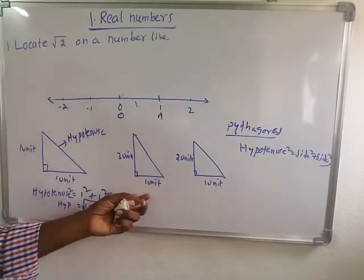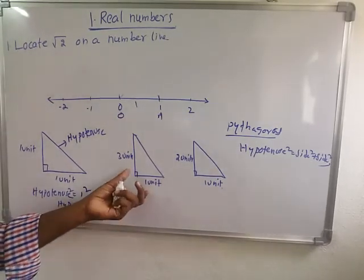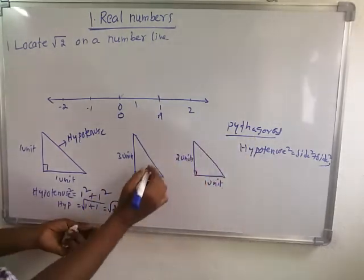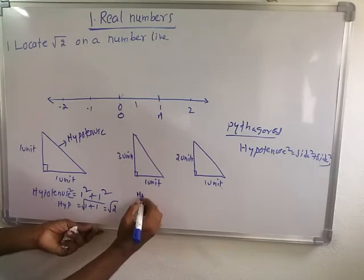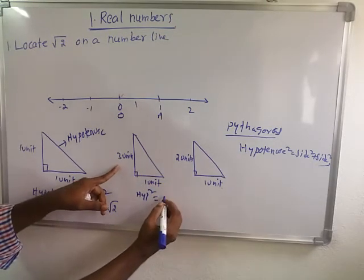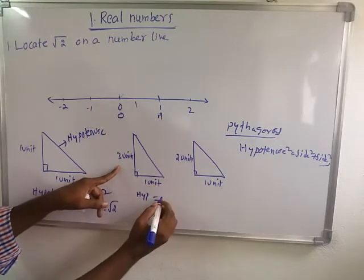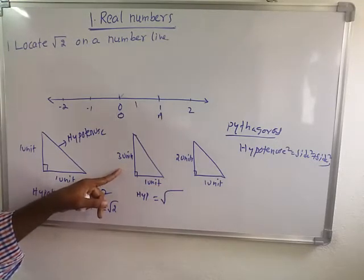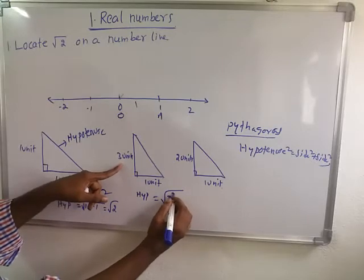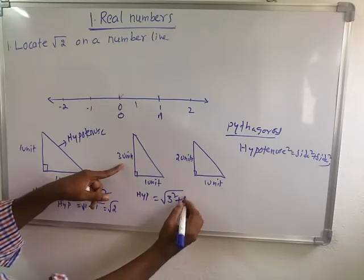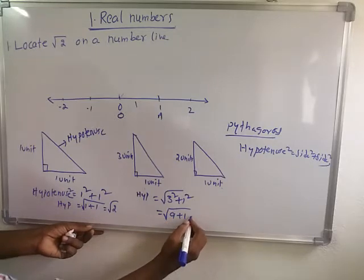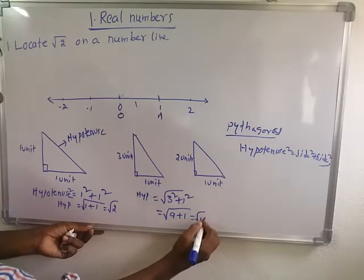Now in this figure, we are applying Pythagoras' theorem. Hypotenuse equals the square root of side squared plus side squared. The side is three, so three squared plus one squared equals the square root of nine plus one, which equals the square root of ten.